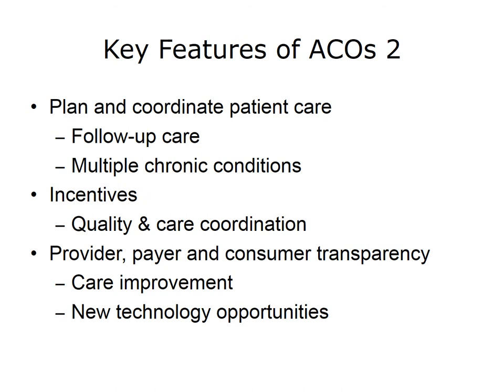A fourth key feature of the ACO model is the ability to plan for and coordinate patient care across different settings — from hospital to doctor's office to home care to social service providers. For example, when an ACO patient is discharged from the hospital, where will follow-up care be provided, and who will manage the multiple activities that occur? Similarly, how will complex care, behavior change, nutrition, and other needs be coordinated for a patient with multiple chronic conditions, such as diabetes? Thinking about and being accountable for care across the continuum will require ACOs to think differently and use technology in new ways.